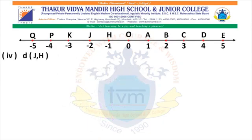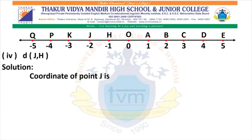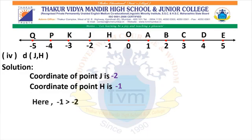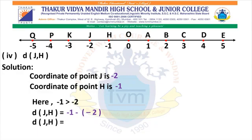Now we have the next question: find distance between point J and H. The coordinate of point J is minus 2. The coordinate of point H is minus 1. Which one is greater among these two? Minus 1. So, minus 1 is greater than minus 2. Distance between point J and H is greater coordinate minus smaller coordinate, that is minus 1 minus (minus 2). We will solve the bracket first: minus into minus 2 becomes plus. So, distance J, H equals minus 1 plus 2. Distance J, H equals 1.